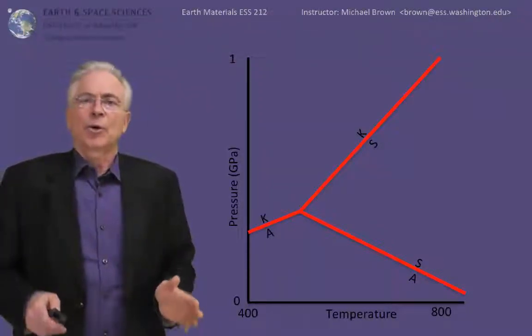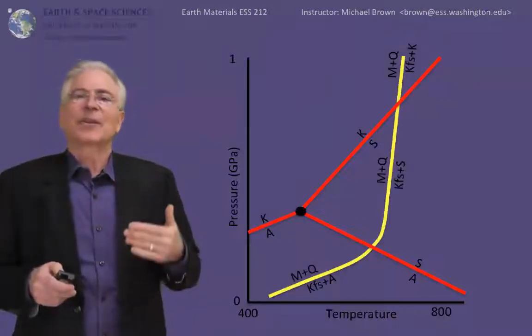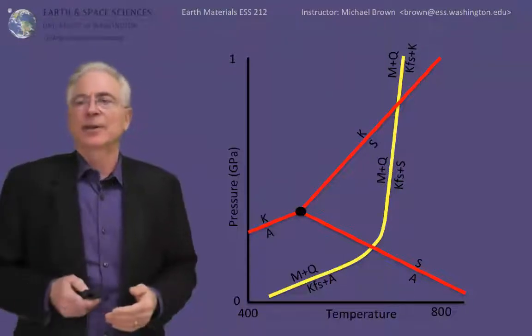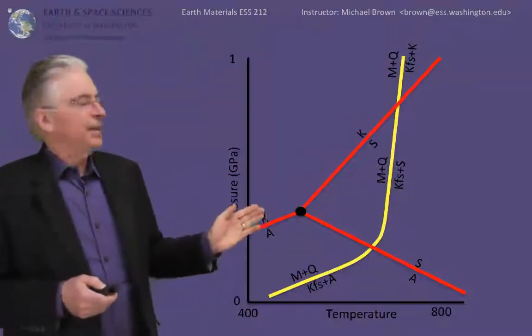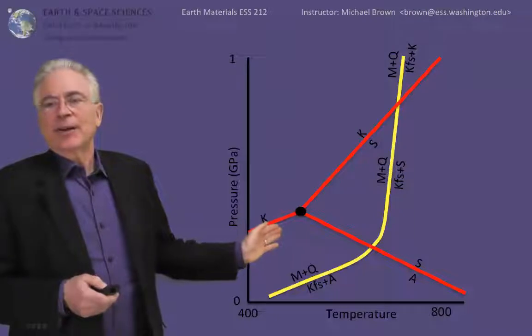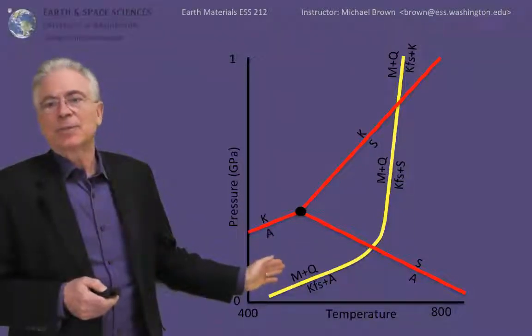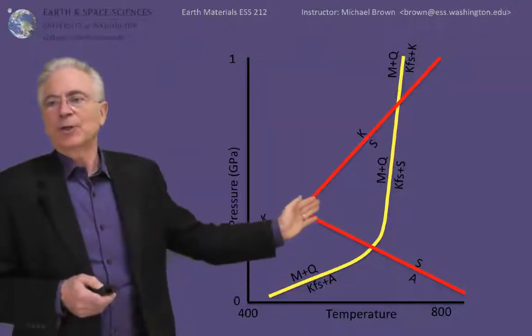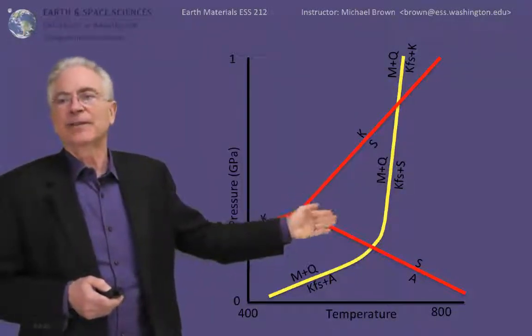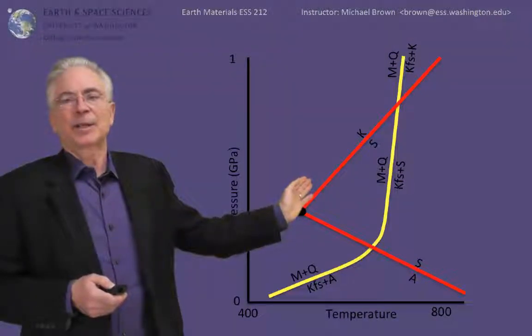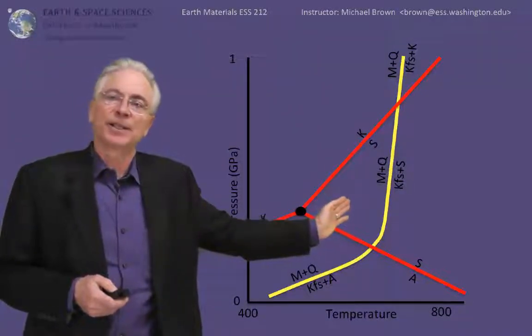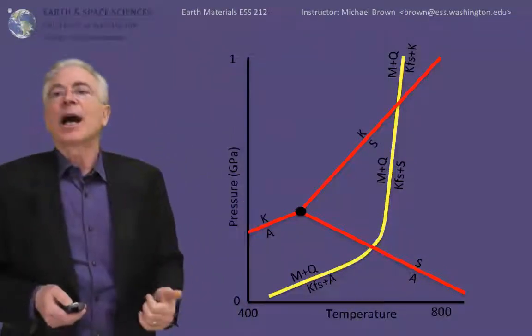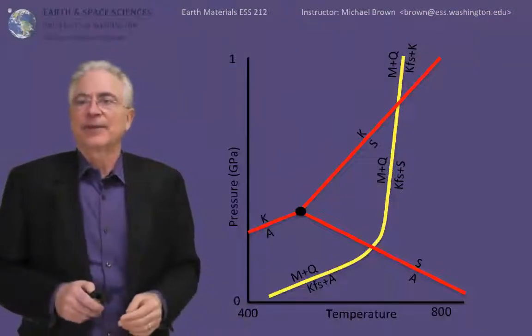We've been talking about a quartz-muscovite-potassium feldspar to aluminosilicate phase boundary, and I plot it here in yellow. You notice on this yellow phase boundary, you have muscovite plus quartz going to potassium feldspar plus andalusite in the lower corner. Once you move into the sillimanite stability field, it's quartz and muscovite going to potassium feldspar plus sillimanite. And at the upper end of things, it's a reaction to kyanite plus potassium feldspar.